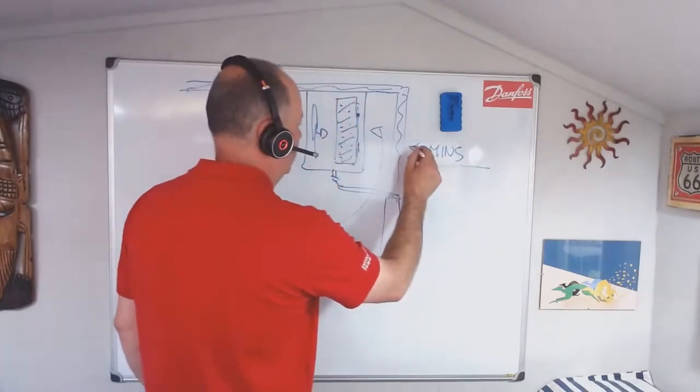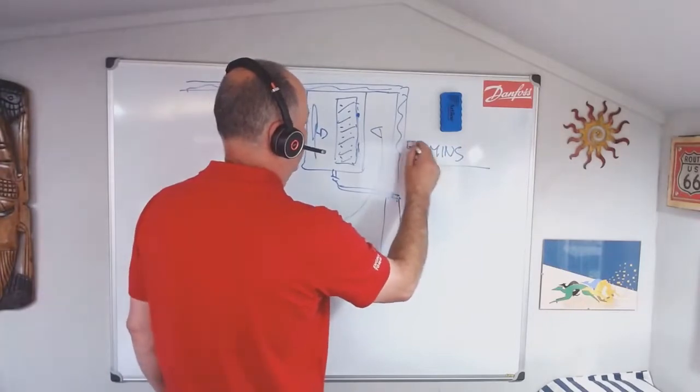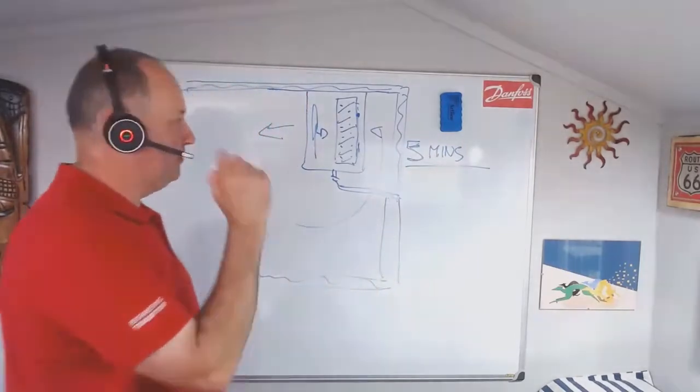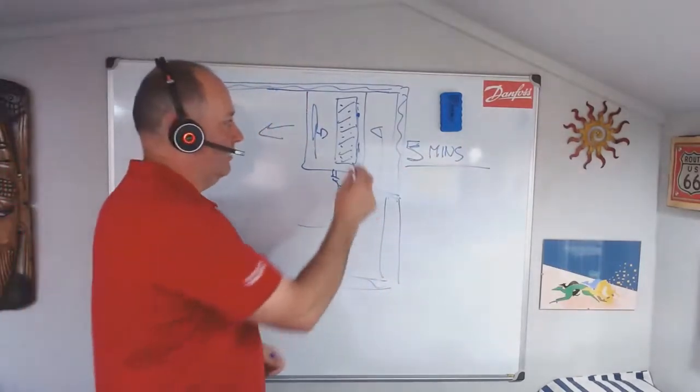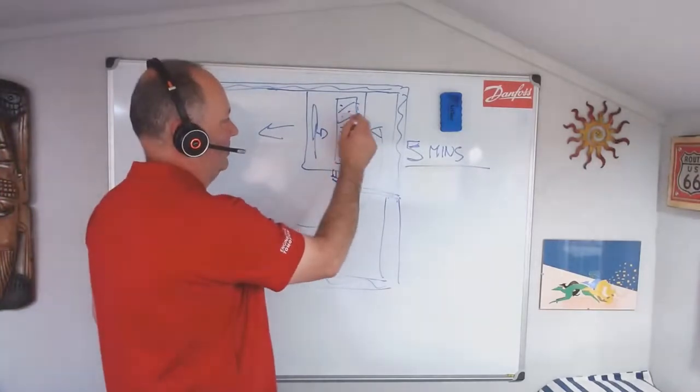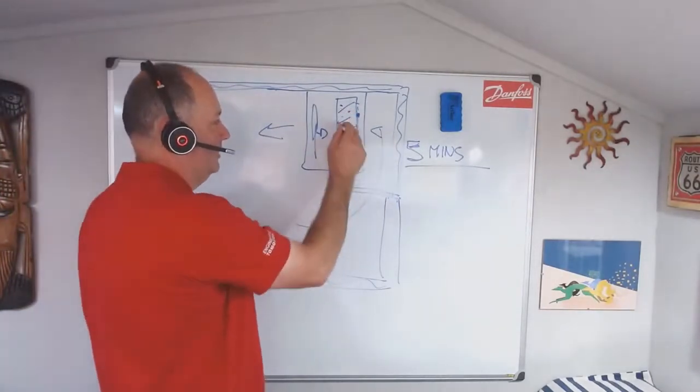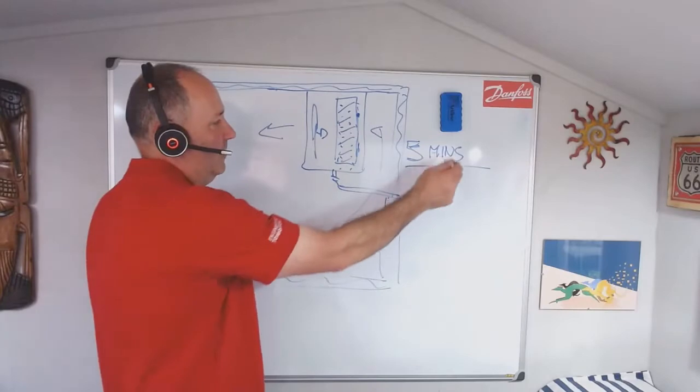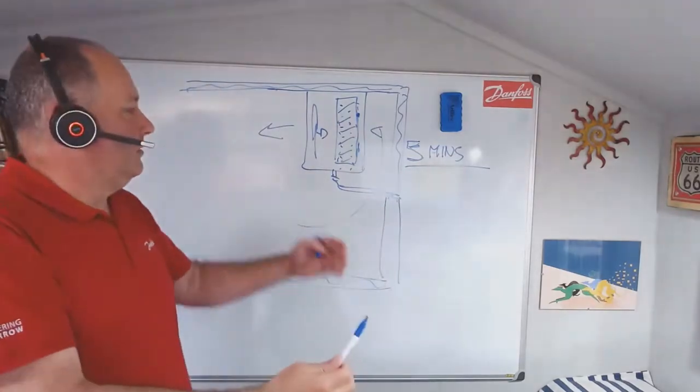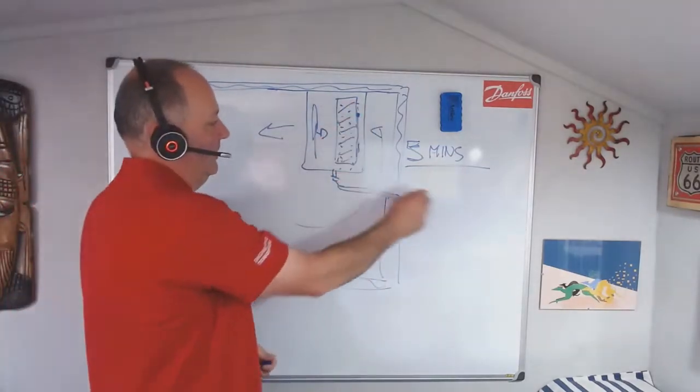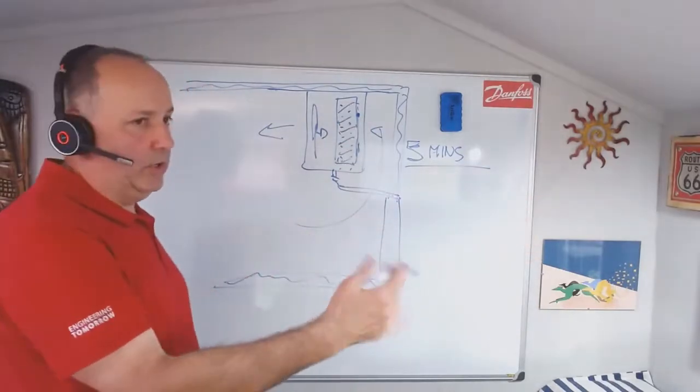Wait five minutes, and then what that does is any moisture that's on the coil, any water, drips off. So this five minutes is called the drip down time. Any moisture will drip off the coil and it goes away.